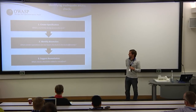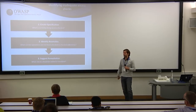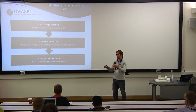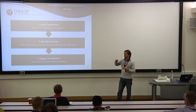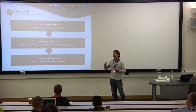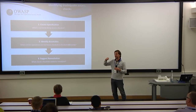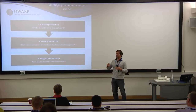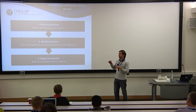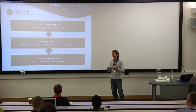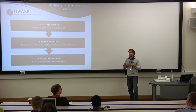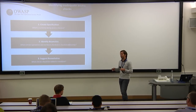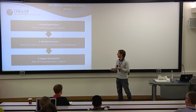Our three-step approach: first, create a specification of the application — identify what functions are being protected and the operations within those protected functions. Second, find functions that are not protected, identify operations within them, and cross-check with the protected set. Third, find anomalies and present developers with findings and remediation advice about where the missing authorization check should be placed and what check is appropriate.